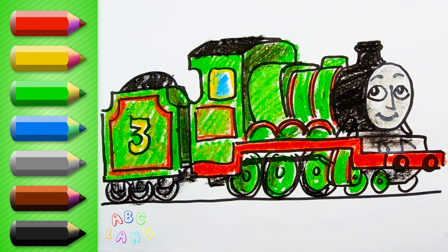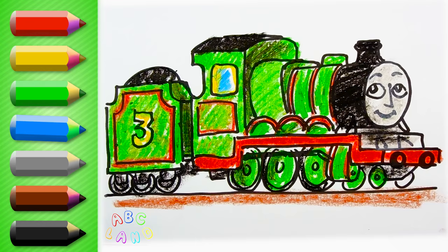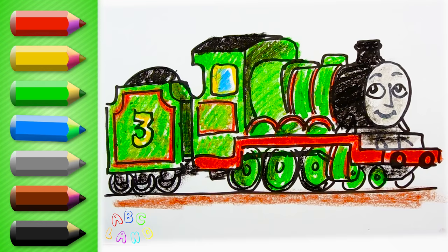The next color that I have to use here is brown. It's for the ground Henry is located on. Now Henry looks just wonderful, happy and colorful. Subscribe to our channel and write your comments. I'll see you in our next videos.